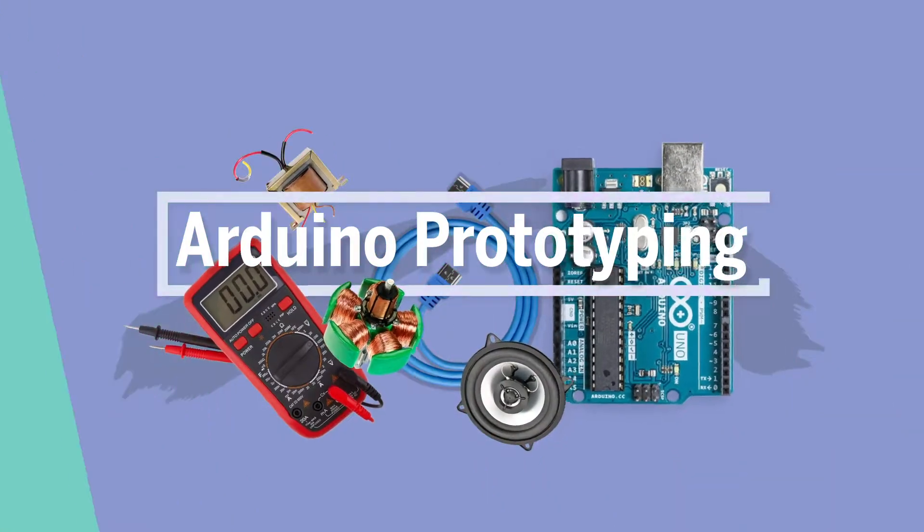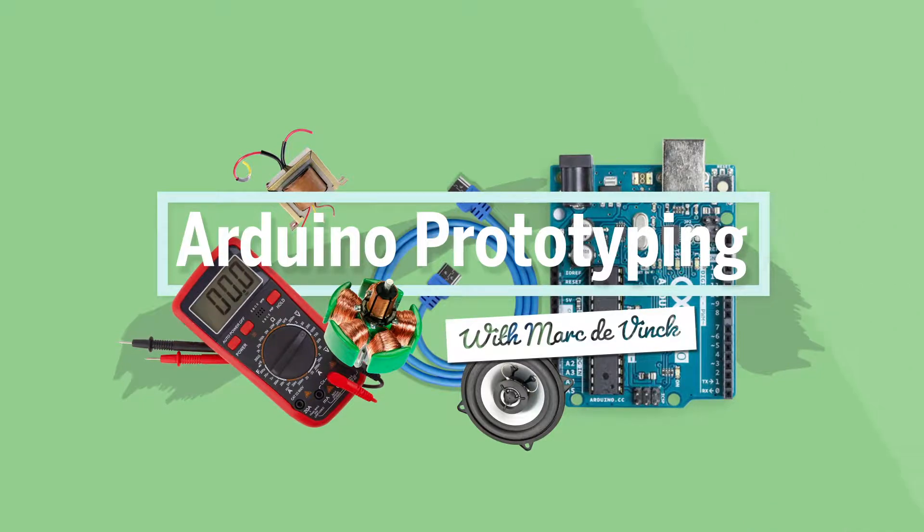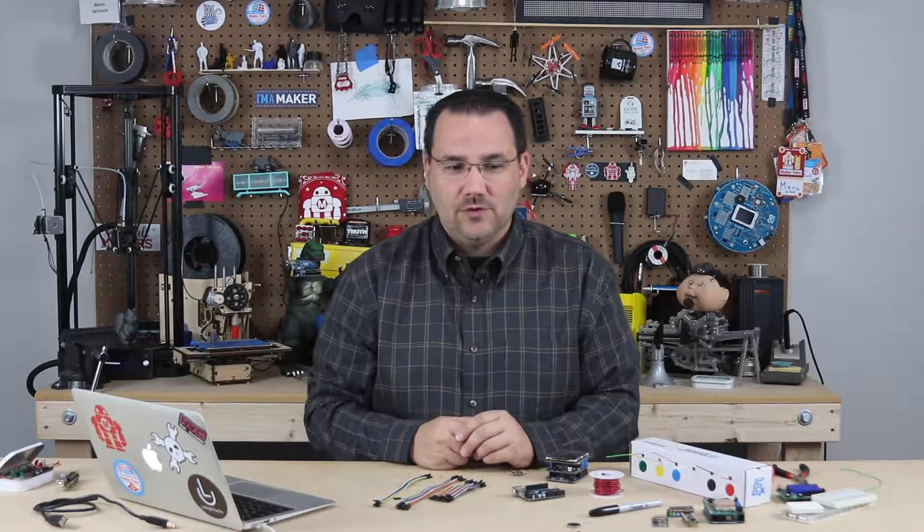Now let's take a look at jumper wires. Jumper wires are used to make connections between components when building your Arduino prototypes. I know it sounds like a simple topic. It is, but I've got a few tips and tricks.